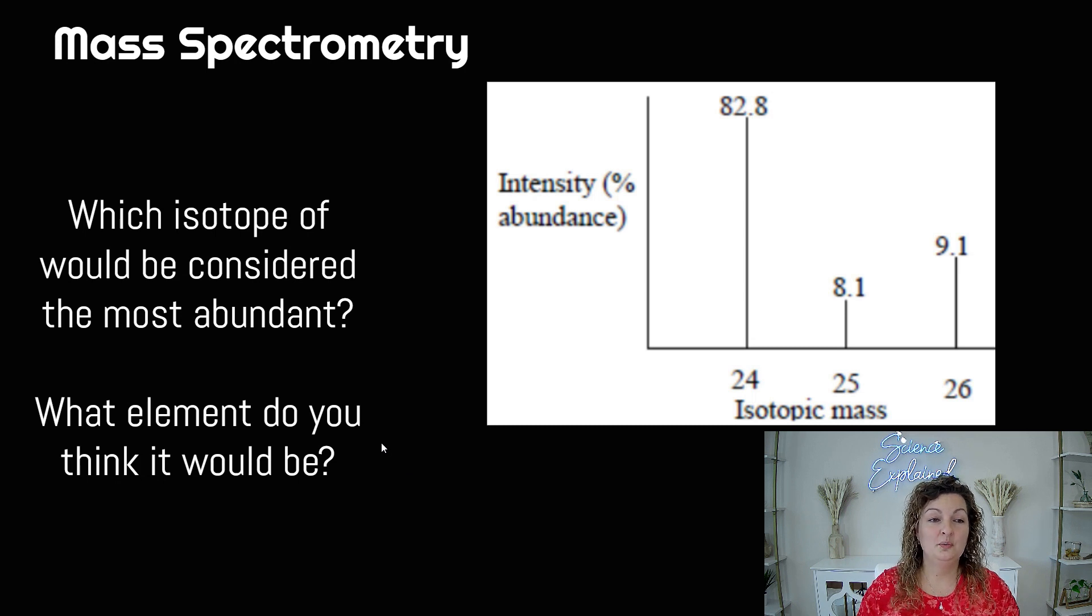Let's try one more. So which isotope would we consider to be the most abundant on this particular graph? In this one, we have three isotopes going on, one, two, and three. And you can see they are a mass of 24, a mass of 25, and a mass of 26. And this is the percent abundance that we're seeing on this graph here. So which one is the most abundant? It's going to be the one with the highest percentage abundance. So the one that's 82.8% is definitely going to be it.